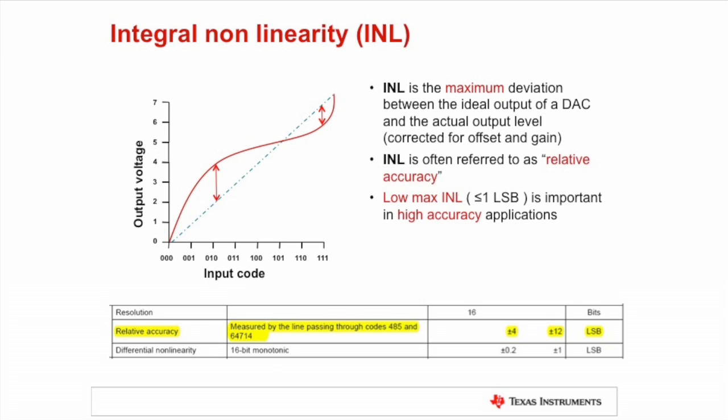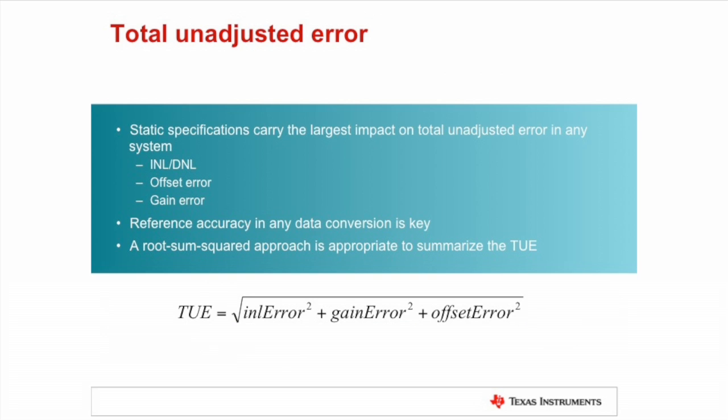INL describes exactly how linear the linear region of operation of a DAC really is. Finally, it should be noted that INL is corrected for offset and gain error. Total unadjusted error is a way of describing overall accuracy the DAC is able to achieve. TUE will take into account offset error, gain error, and INL error, all of the key flaws in the DAC DC transfer function.